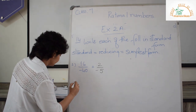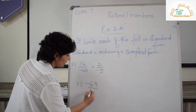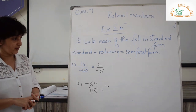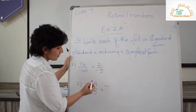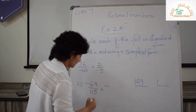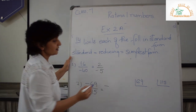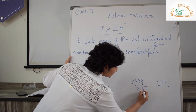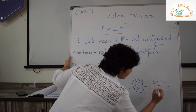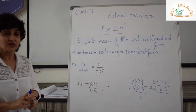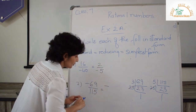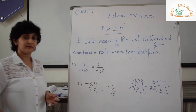Then let me do the seventh one: minus 69 upon 115. There is a negative in the numerator, so let me keep the negative sign first. I do not know my table, so I will do prime factorization. Numerator: 3 twos are 6, 3 threes are 9, 23 ones — so 69 equals 3 times 23. Denominator similarly factorizes. The common factor is 23. Strike it out and you are left with 3 upon 5. So my answer is minus 3 upon 5.